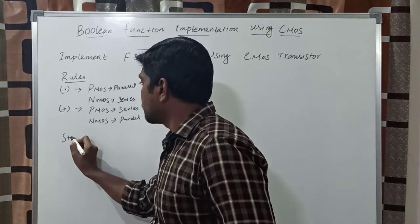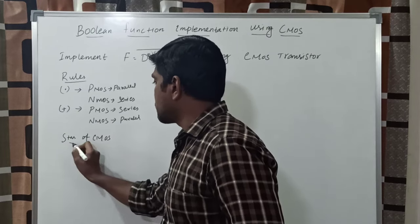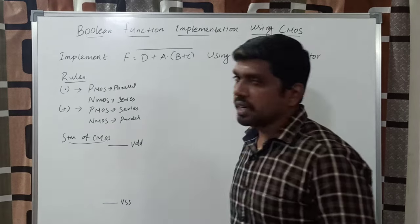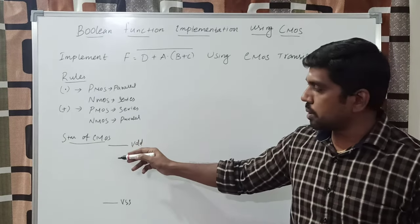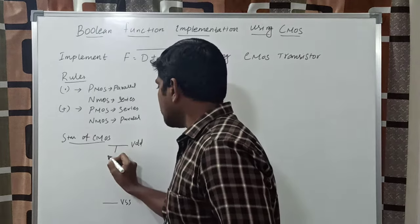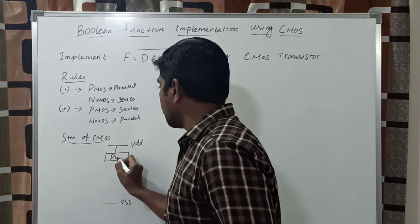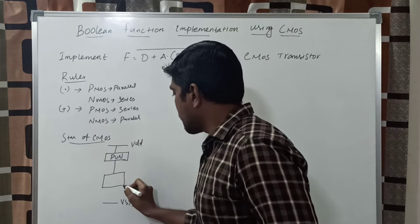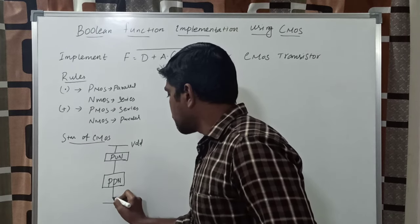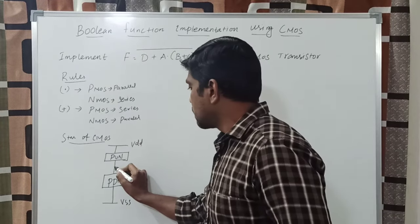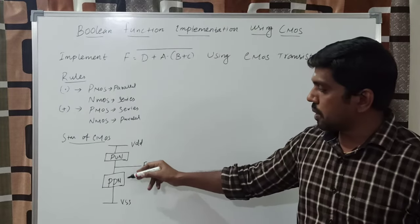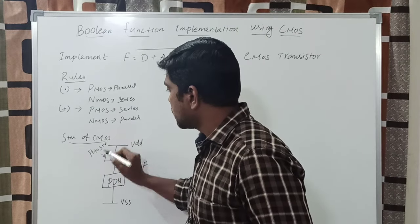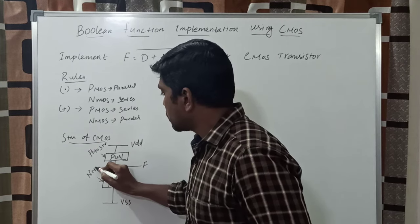Then we will use the structure of CMOS. First, you apply the power supply VDD and VSS. Between that, you connect the pull-up network and pull-down network. VDD is connected to the pull-up network. The bottom portion uses the pull-down network, PDN, which is connected to VSS. The pull-up network consists of PMOS transistors. The pull-down network consists of NMOS transistors.